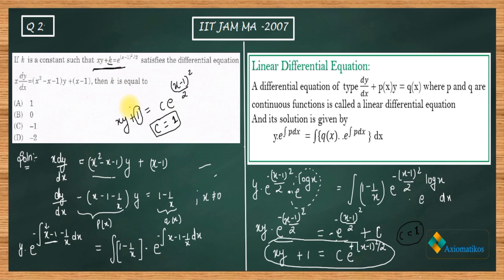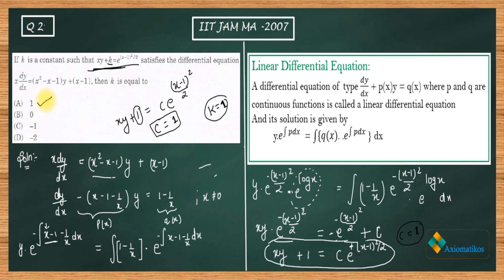With c = 1, our solution matches the given form, and the constant 1 on the left corresponds to k. Therefore k equals 1 is the correct answer. Since this is an MCQ, once we confirm k = 1 satisfies the solution, we do not need to check the remaining options. Thank you.